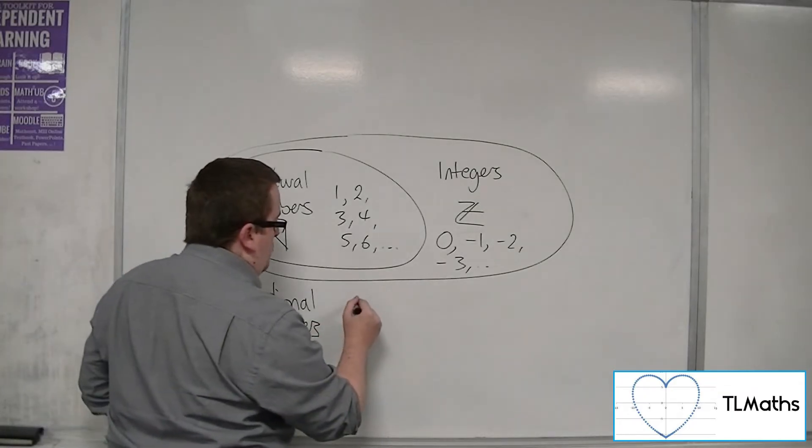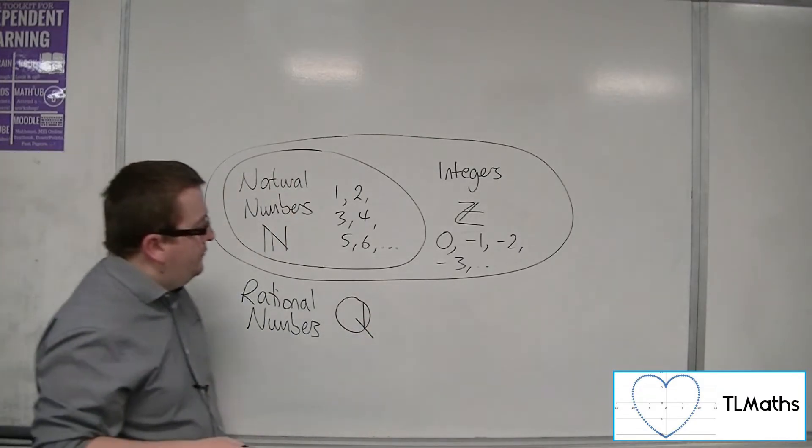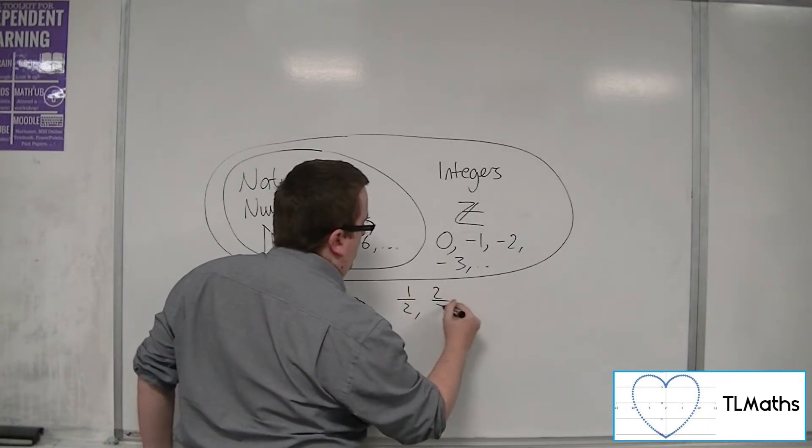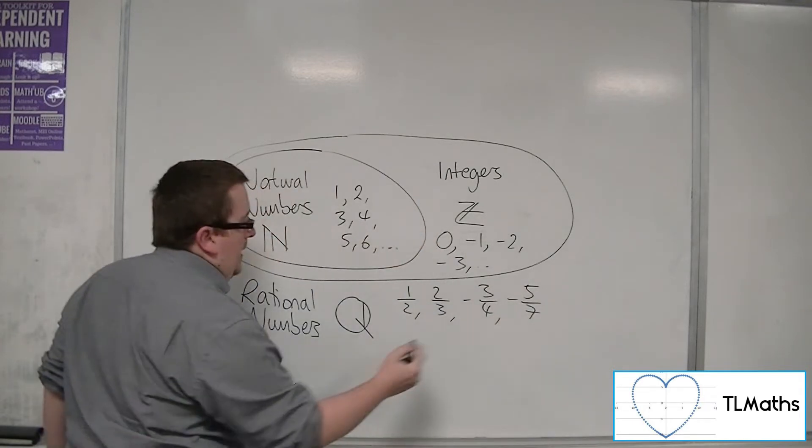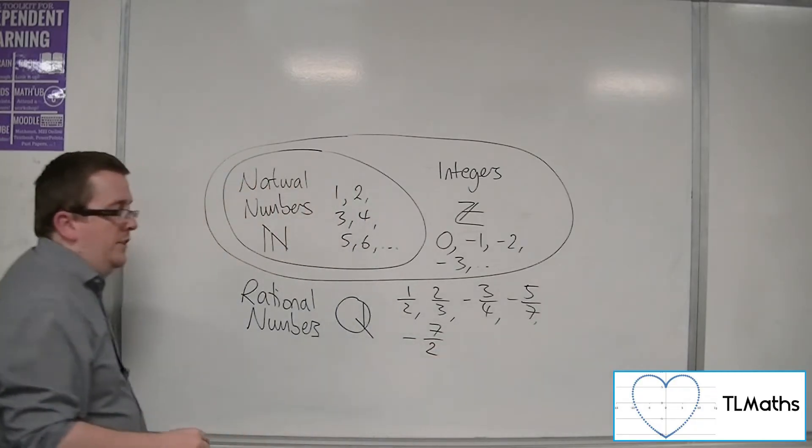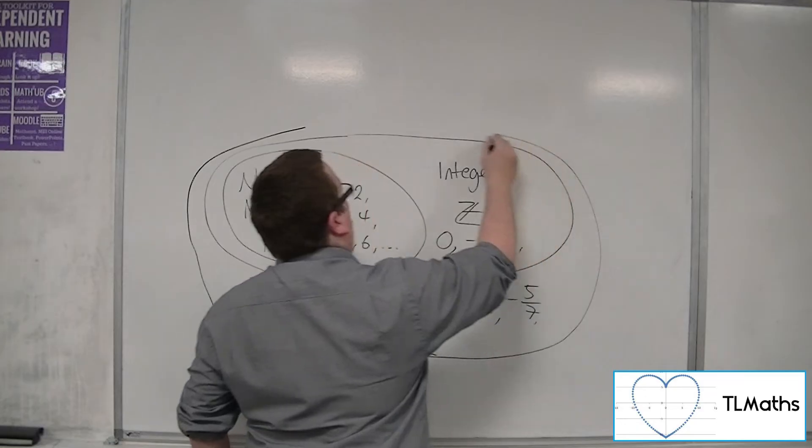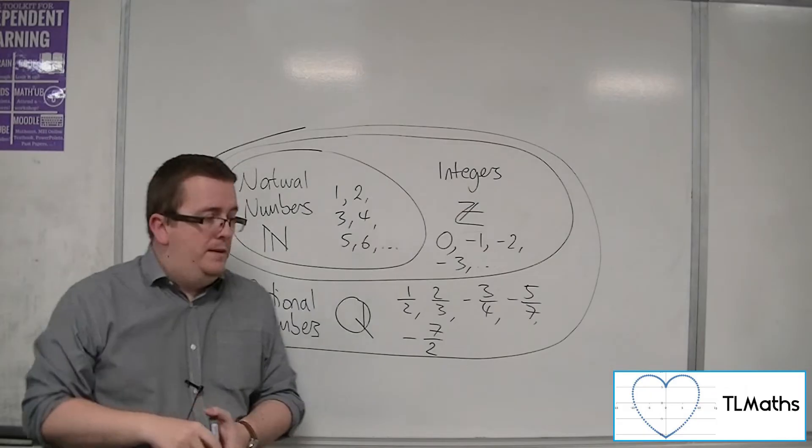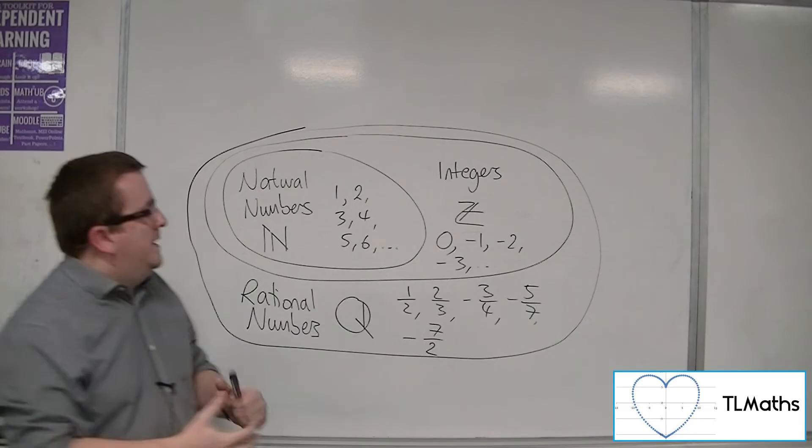Now the rational numbers are represented with a Q for quotients. So these will include a half, two thirds, minus three quarters, minus five sevenths, minus seven halves. So you can have top-heavy fractions in there as well. But it includes all those natural numbers, all of the integers, and all of those fractions as well. So our diagram's getting bigger and bigger.